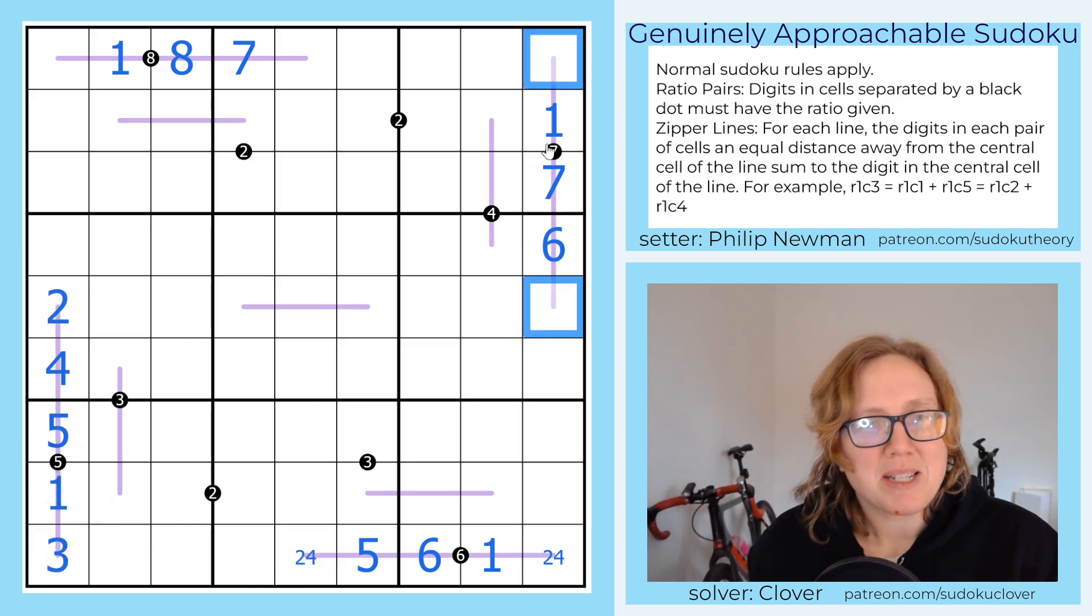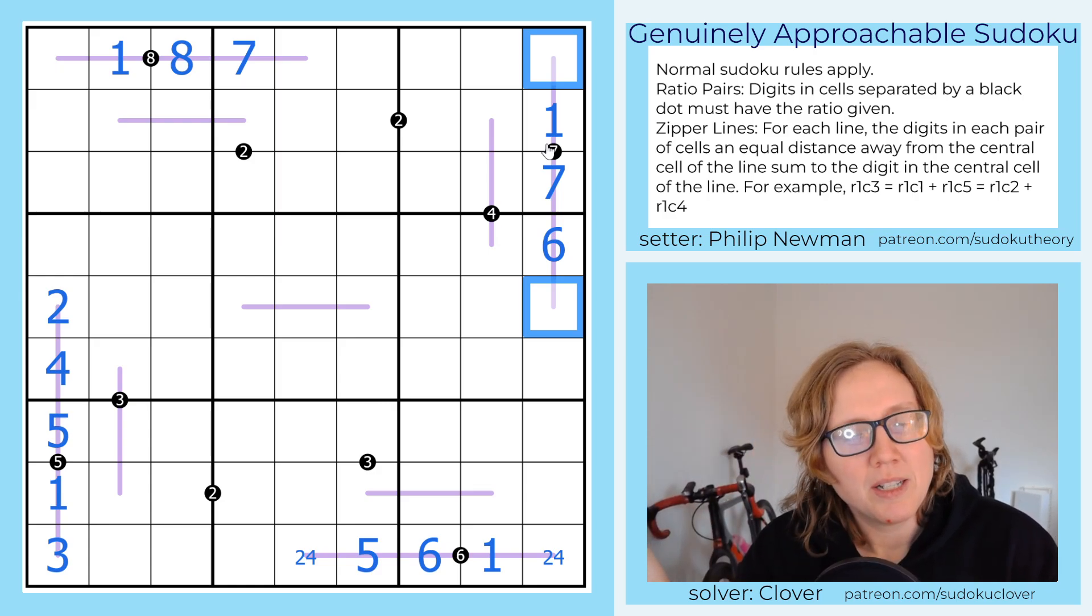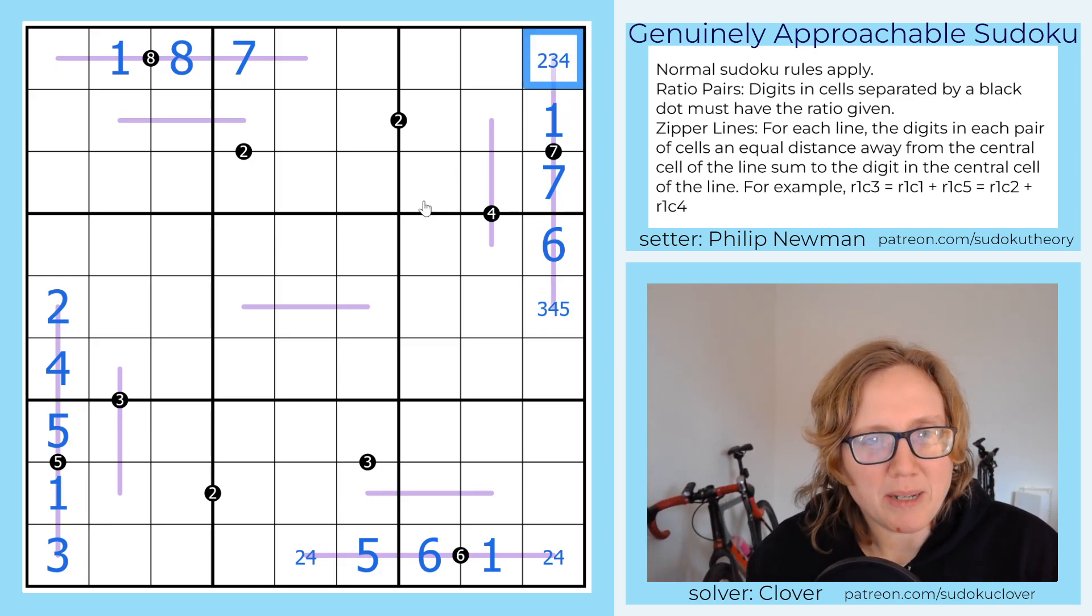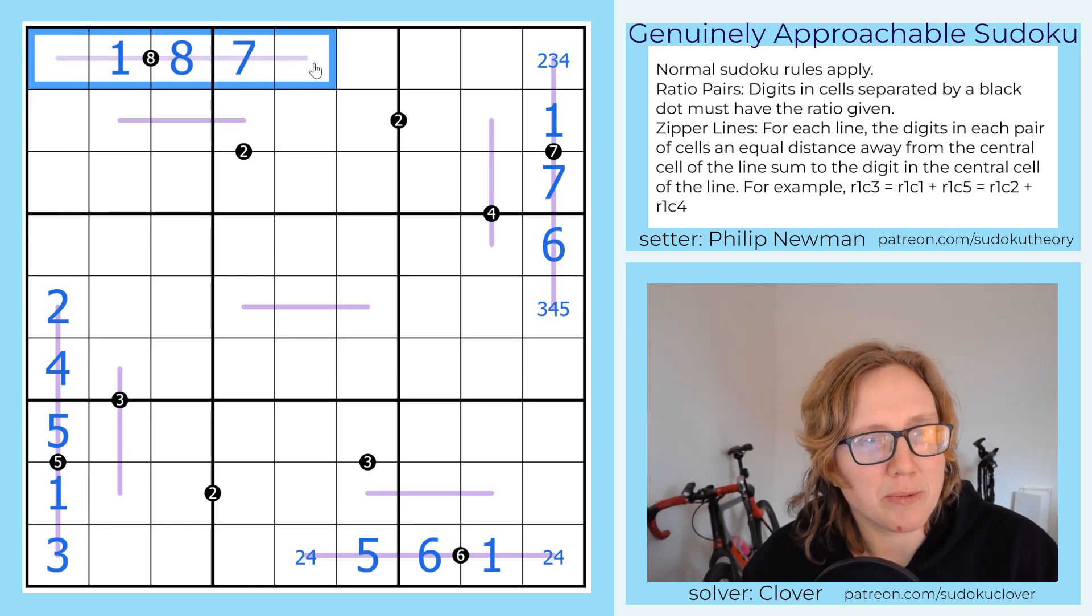And by the way, the reason I'm being so diligent to specify the if all the digits see each other bit is because one thing people sometimes don't notice with zipper lines is that you can, if the digits on the ends don't see each other in the puzzle, you can duplicate digits. So 6 could be like 3 plus 3, which is something that's really easy to overlook. Anyways, these have to sum to 7, and they're not 1 and 6. They could be 2 and 5, they could be 3 and 4.